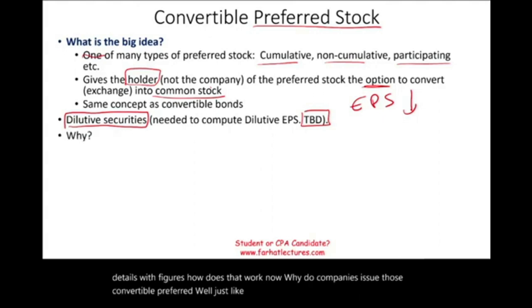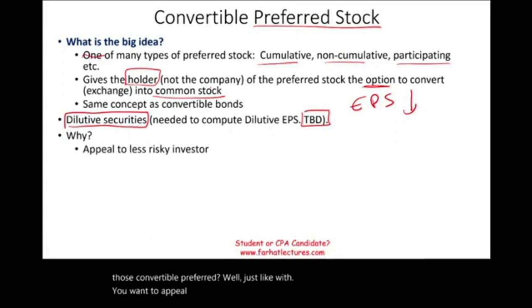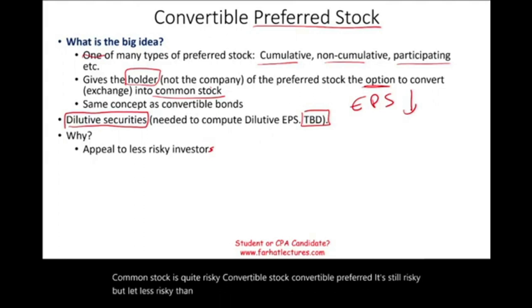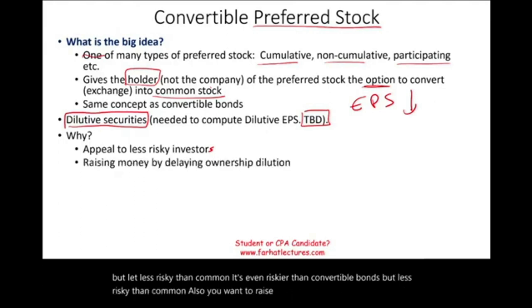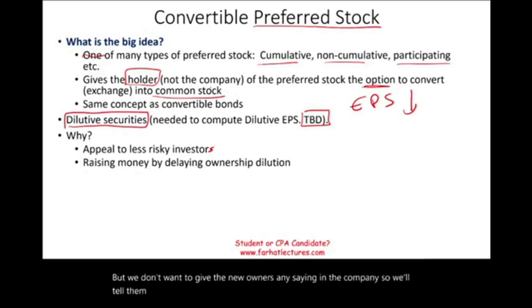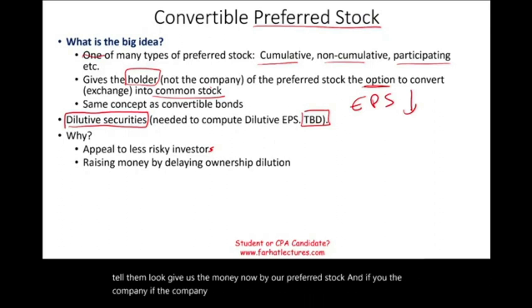Why do companies issue convertible preferred? Just like with bonds, you want to appeal to less risky investors. Common stock is quite risky; convertible preferred is still risky but less so than common stock — though it is riskier than convertible bonds. Companies also want to raise money to operate the business while delaying actual ownership dilution. We want to raise money without giving new owners a say in the company — so we tell investors: buy our preferred stock, and if the company makes a profit, you have the option to switch to common stock.